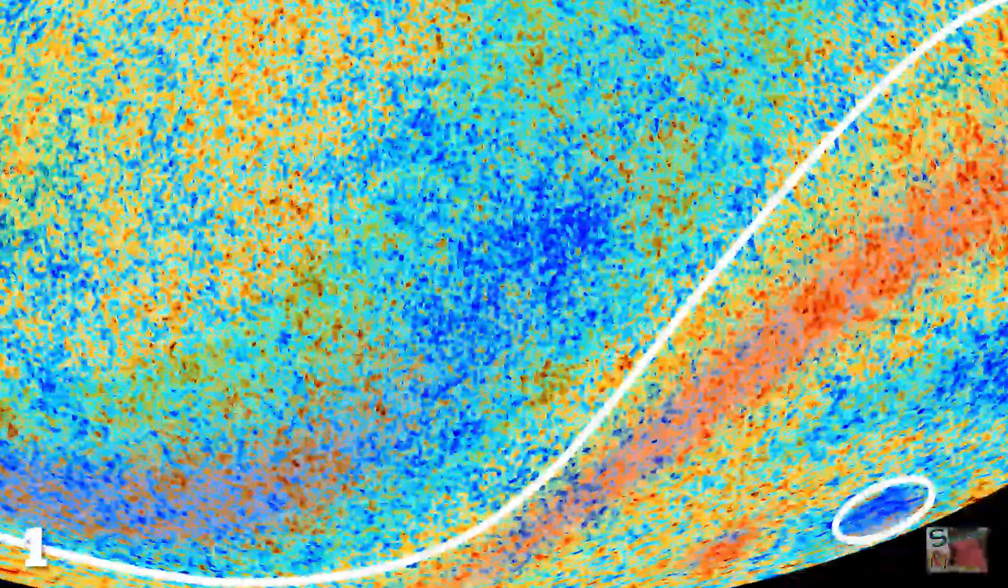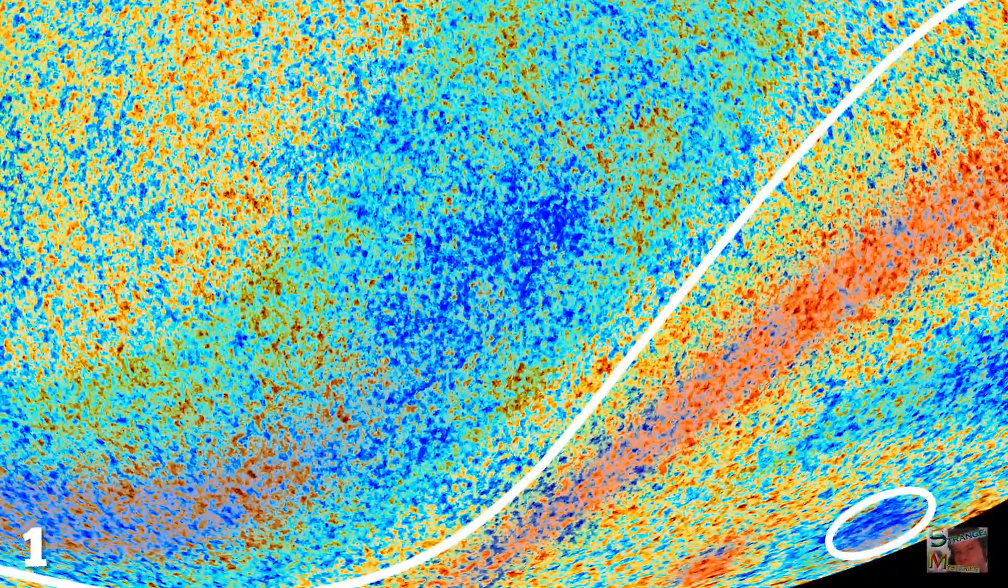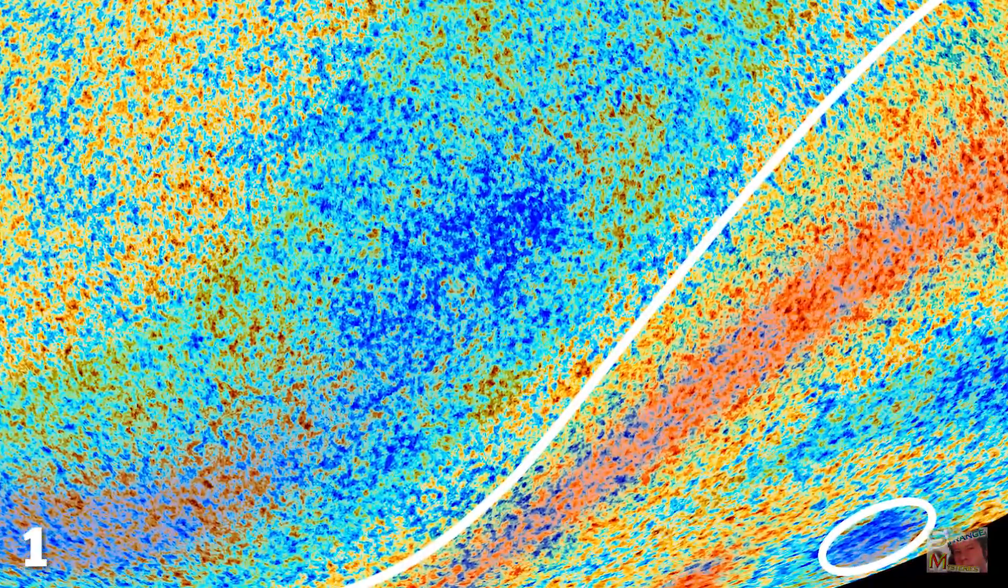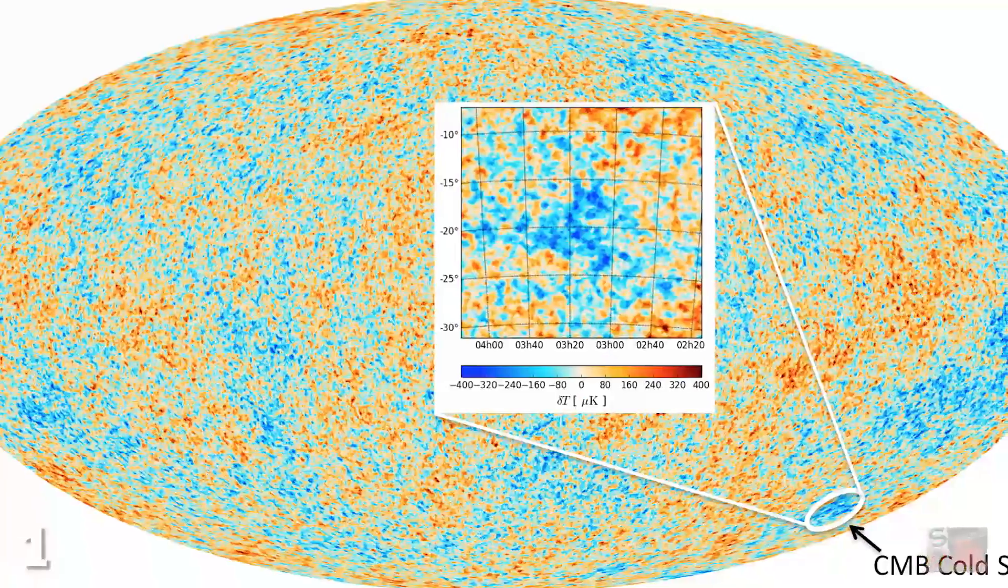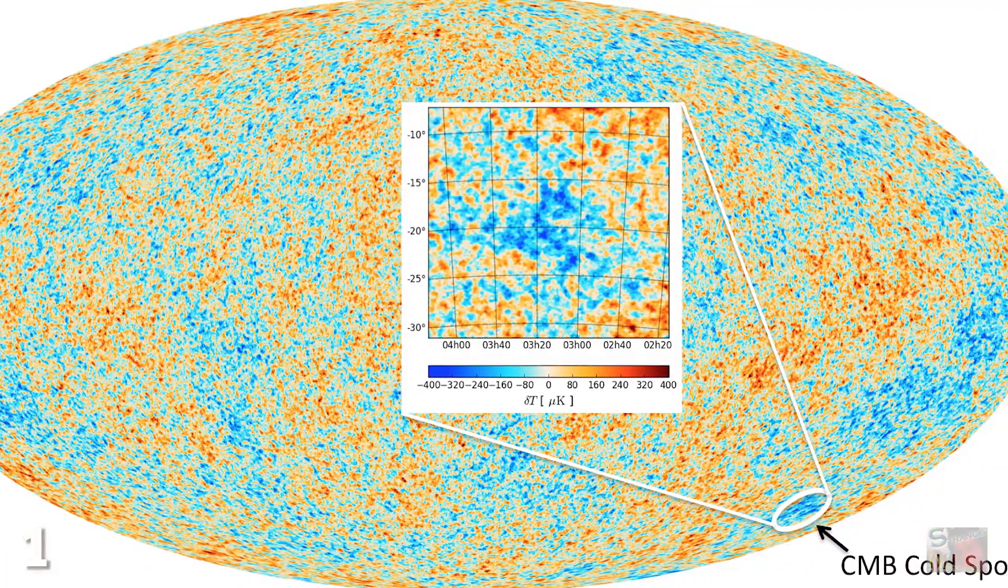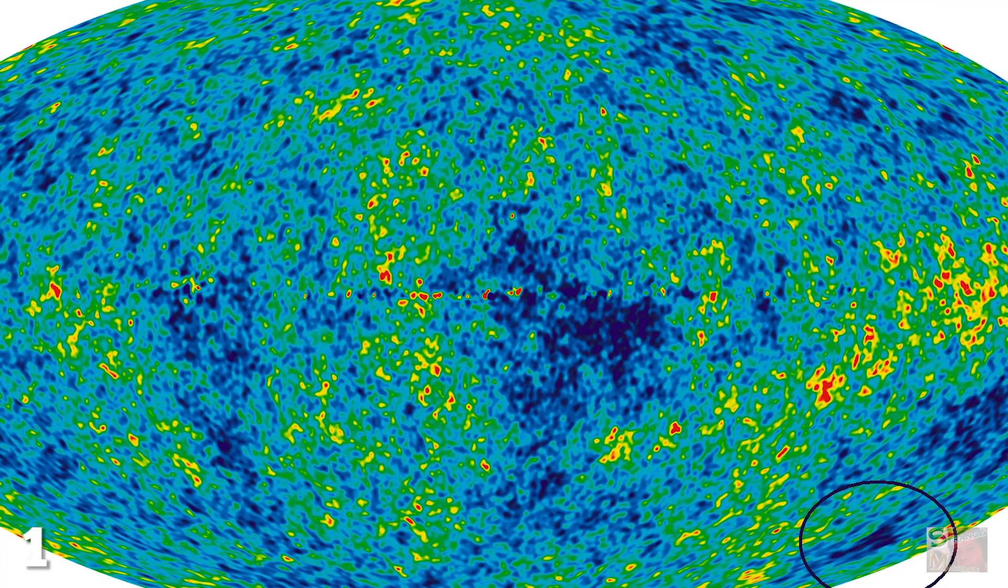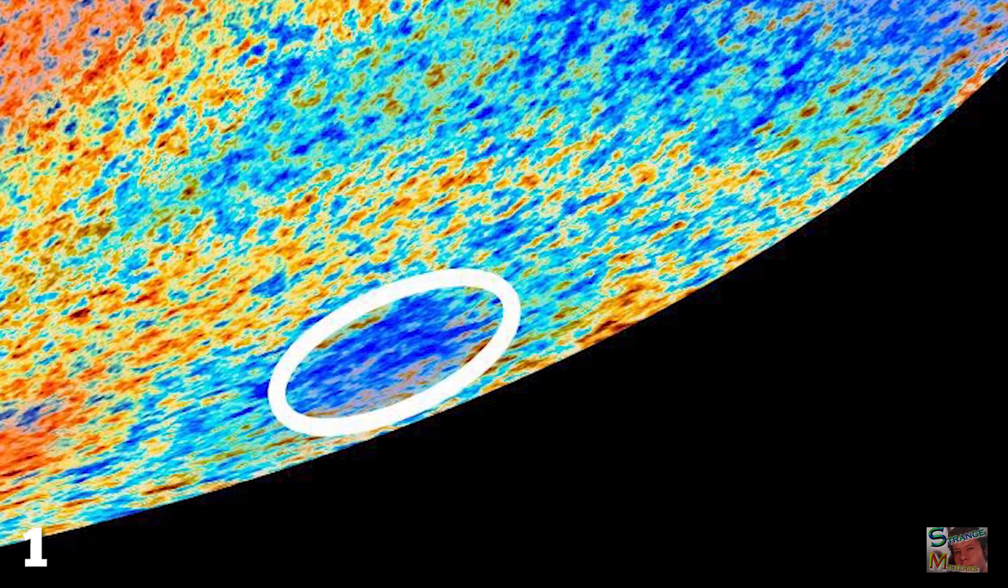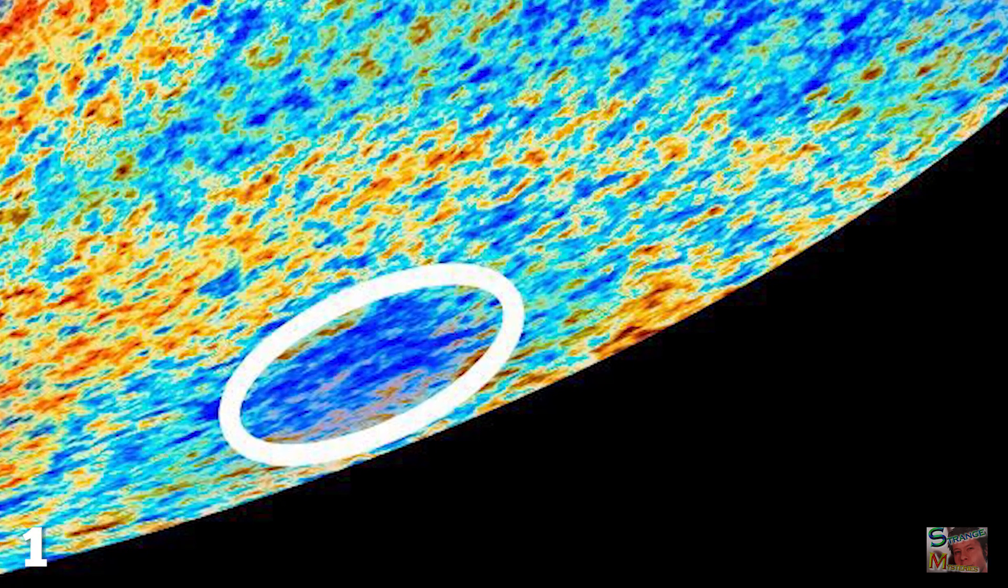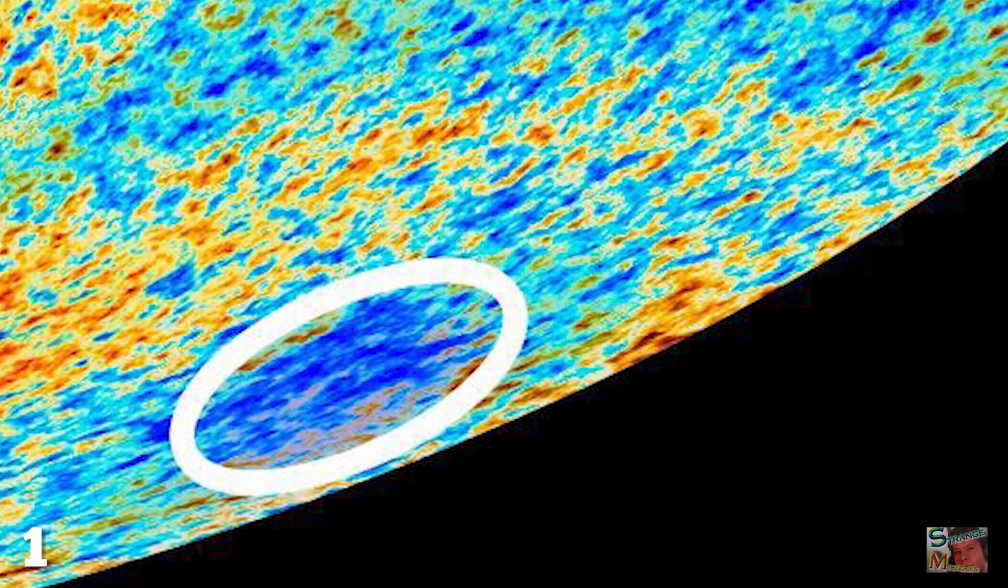The cold spot refers to a region of space in the radiation left over from our universe's formation which is noticeably cooler than anywhere else. The patch was detected in 2004 by NASA's WMAP satellite, but until recently nobody could explain why such a cold area might have formed.